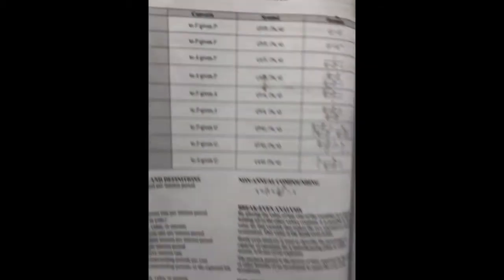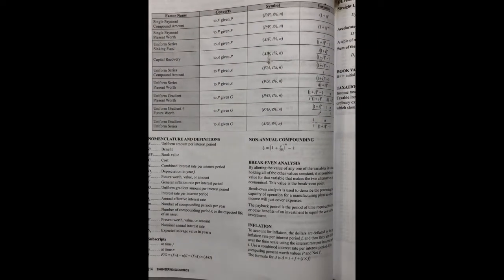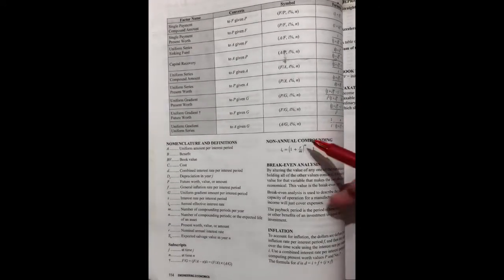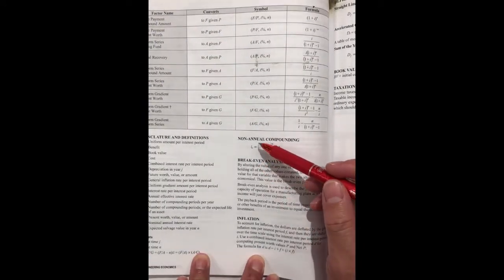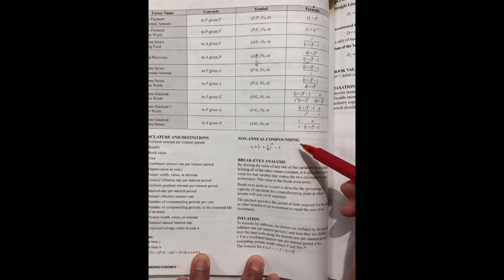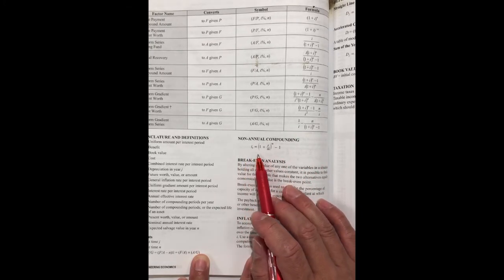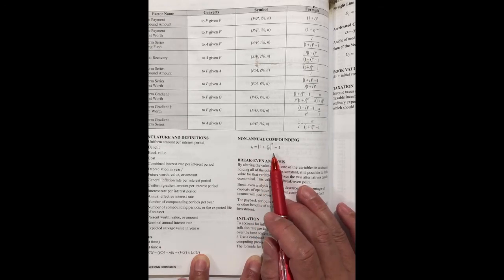Since this is changing to compound quarterly, we can find the formula in the FE handbook on page 114. They have the non-annual compound formula. We can follow this formula to do the calculation.